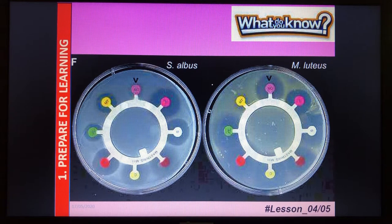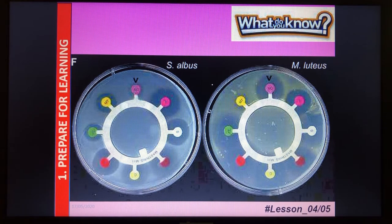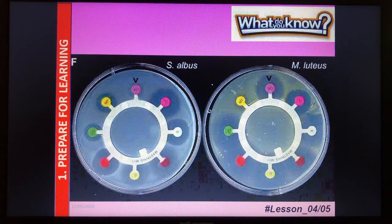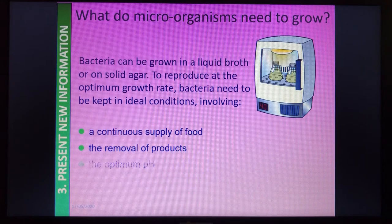Here we've got some examples of the plates we make with the agar — it's full of agar jelly providing the nutrients. Each of those colored discs is a different antibiotic. We can culture the bacteria that a patient has, put these discs on, and see which is the most effective antibiotic for them to be prescribed. That's putting it into practice.